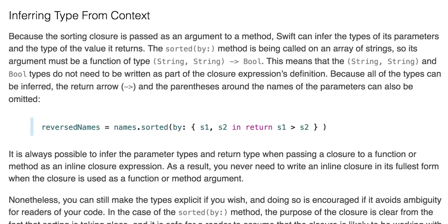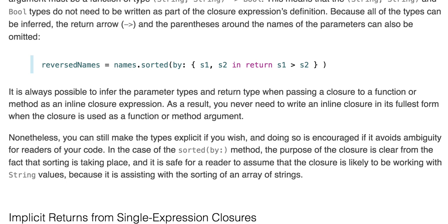Because it's always possible to infer the parameter types and return type when passing a closure, you never need to write an inline closure in its fullest form when the closure is used as a function or method argument. Nonetheless, you can still make it explicit if you wish.